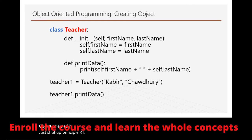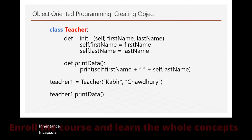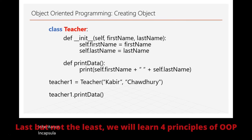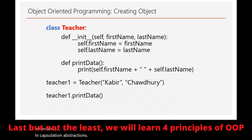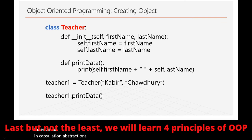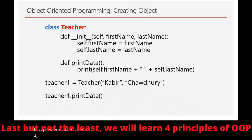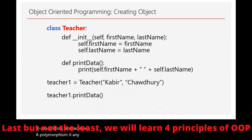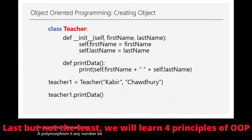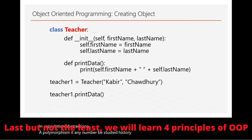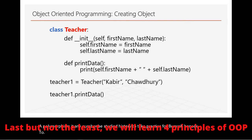The four principles of Object Oriented Programming are: inheritance, encapsulation, abstraction, and polymorphism. We have to practice with these four principles.